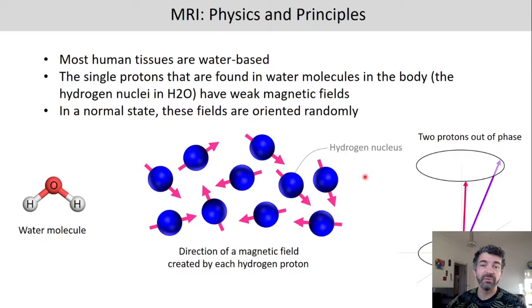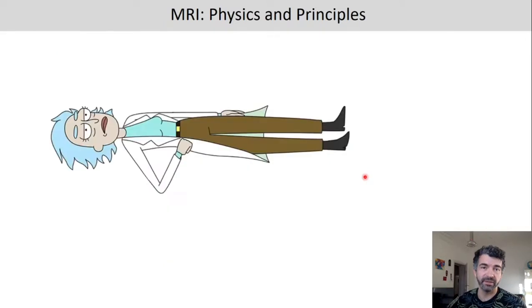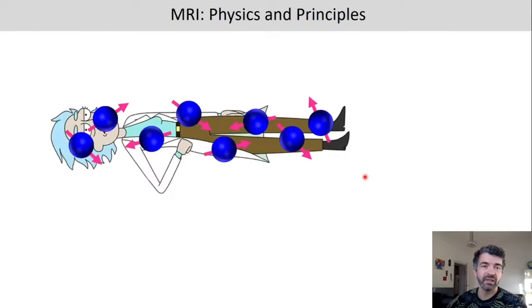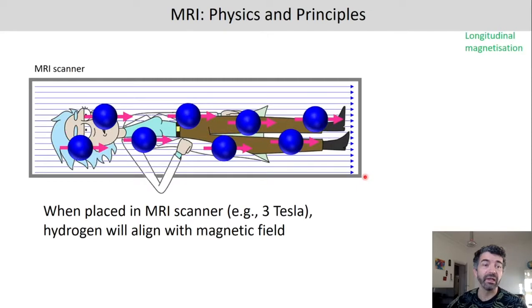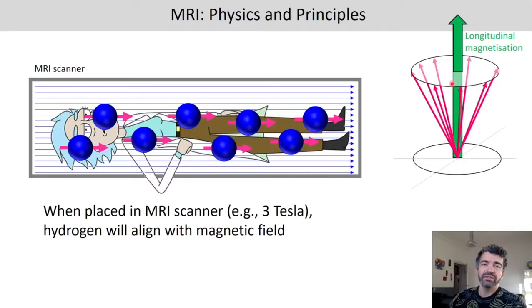So imagine we have a person in the scanner, and their hydrogen nuclei in the water molecules are randomly oriented. Now, if we apply the magnetic field here, then what happens is that they're all aligned. The magnetic field is so strong that the hydrogen nuclei are actually aligned with the magnetic field of the scanner. Here you can see it is illustrated how eight protons are oriented into different directions. And even though they are not in phase, they all point rather to the top than any other direction, which means we have a net longitudinal magnetization of the protons.